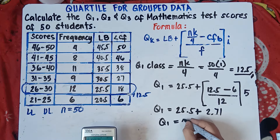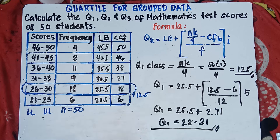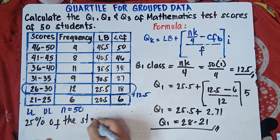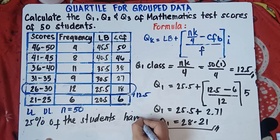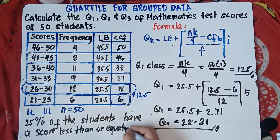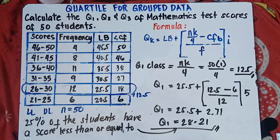25.5 plus 2.71 equals 28.21. So quartile 1 is equal to 28.21. We can conclude that 25% of the students have a score less than or equal to 28.21.